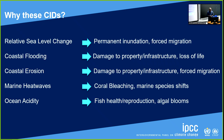Why did we pick these CIDs? Like Alex and Erica explained yesterday, we didn't just pull these out of the air. We looked at a lot of literature and connected with the sectoral aspects in Working Group 2. Relative sea level change can lead to permanent inundation and forced migration. Coastal flooding can cause damage to property, infrastructure, and loss of life. Coastal erosion can also lead to property damage and forced migration. Marine heat waves can cause coral bleaching and shifts of large parts of marine species. Ocean acidity can affect fish health and reproduction and cause algal blooms.